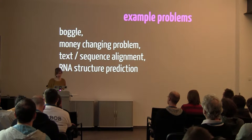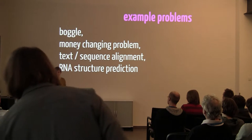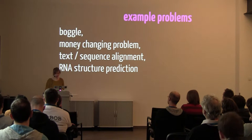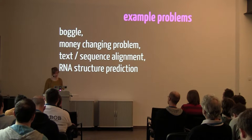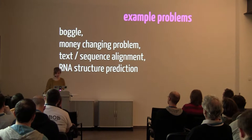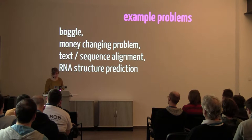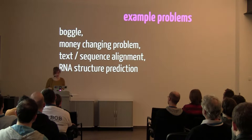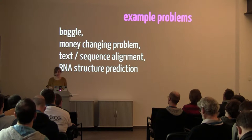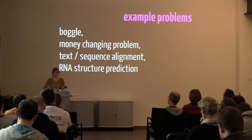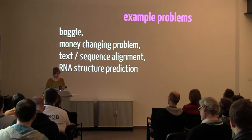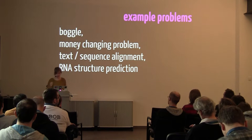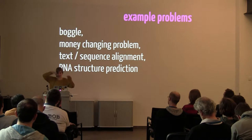Another nice example is the money-changing problem — the smallest dynamic programming problem I could find. You have an amount of money and some coins, and you figure out how to decompose that amount with those coins. Another example used in bioinformatics is text or sequence alignment, to find how similar sequences are — for example, comparing human DNA to mouse DNA. And another example from bioinformatics would be RNA structure prediction.